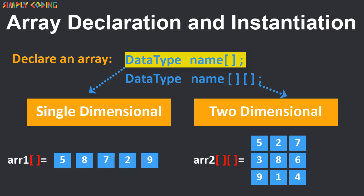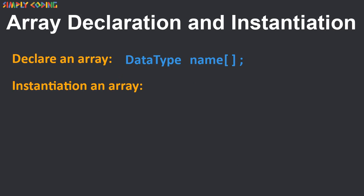For the moment, we will focus only on single dimensional array. Now, this is just declaration. We still have not created or instantiated the array. There are two ways you can do that. One is static and other is dynamic.